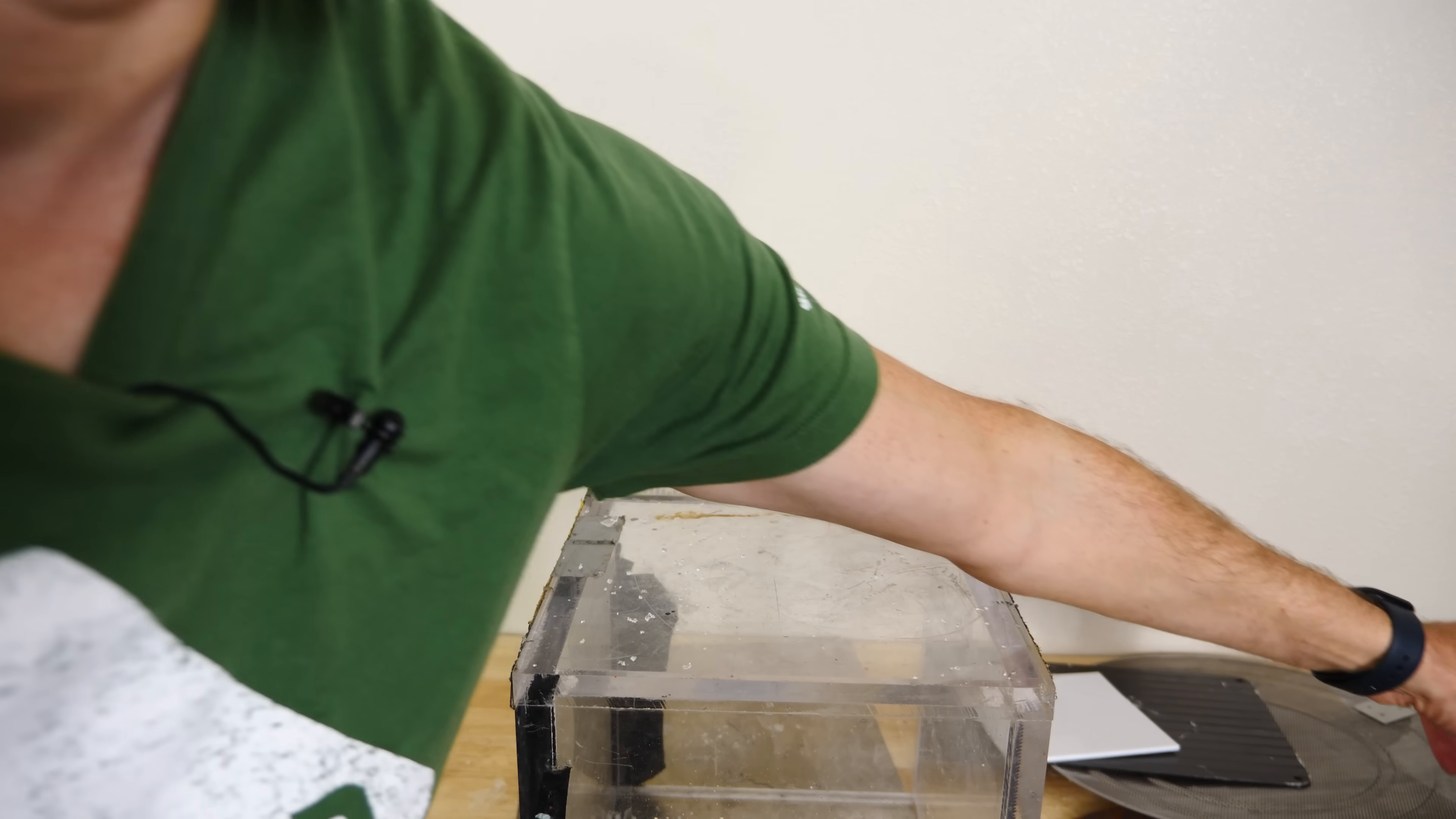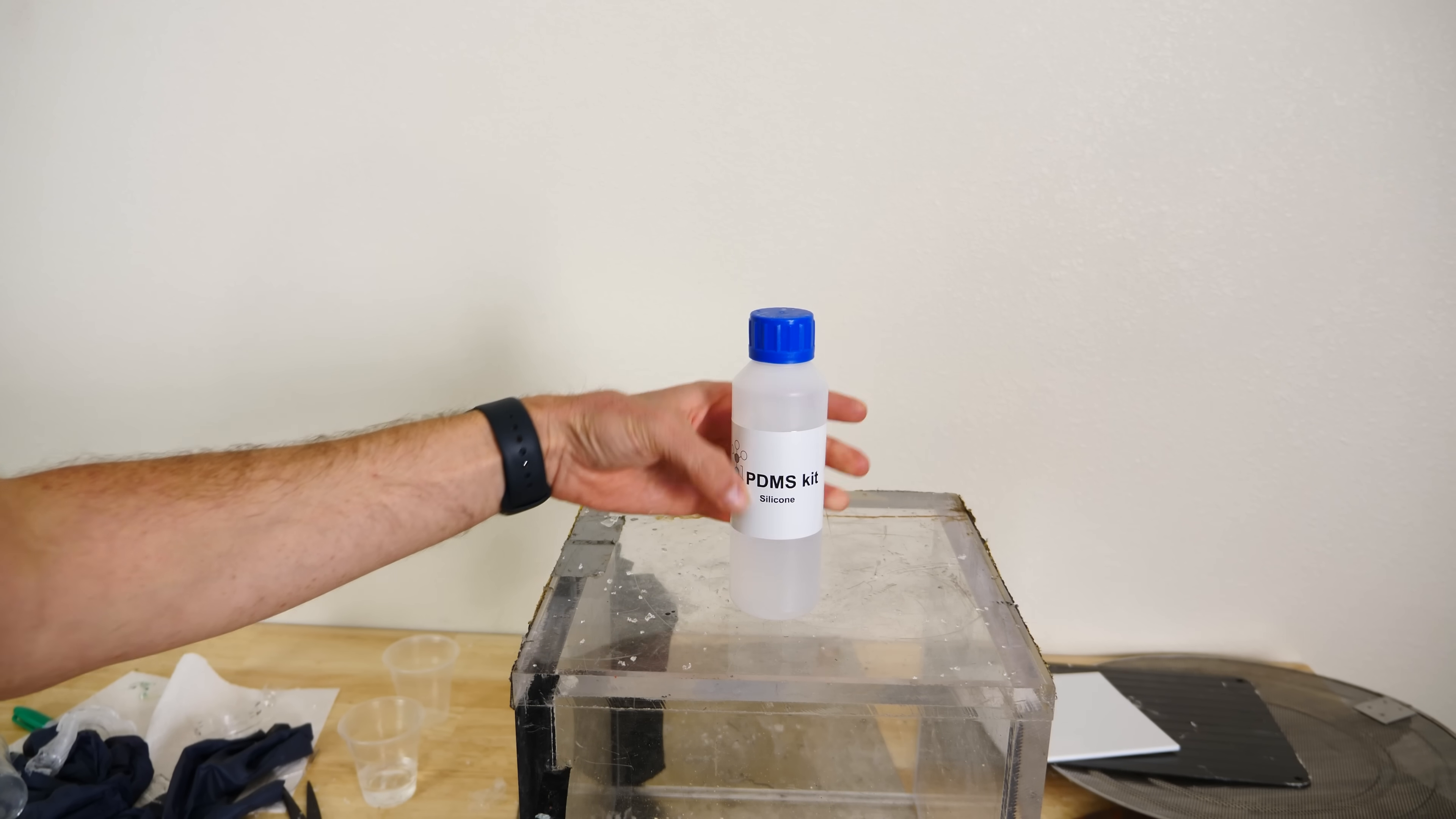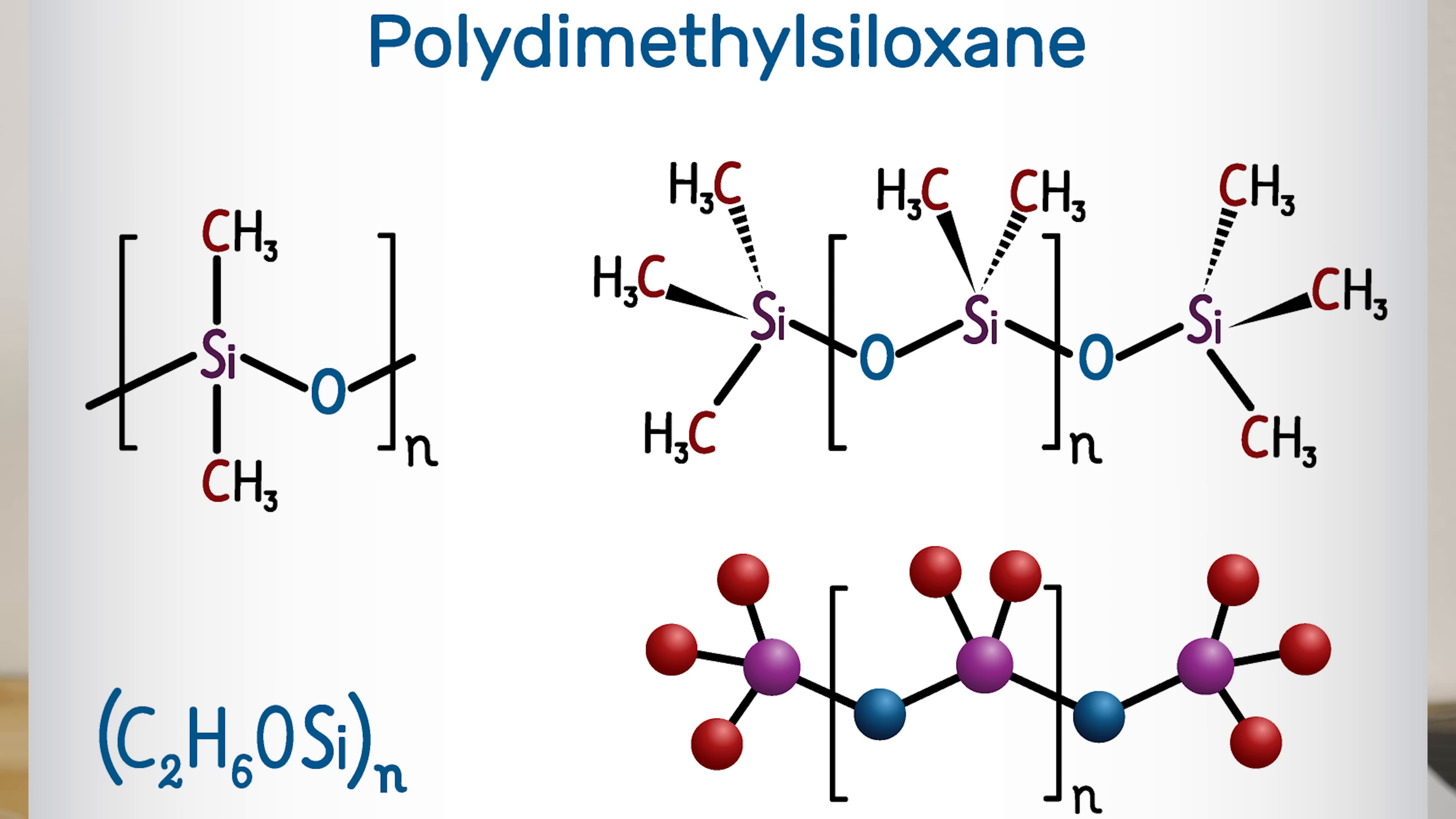So in order to do this, you need some really thin polydimethylsiloxane. That's abbreviated PDMS. PDMS is a polymer of silicone, it's almost completely inert, non-toxic, non-flammable. It's used in a lot of applications.